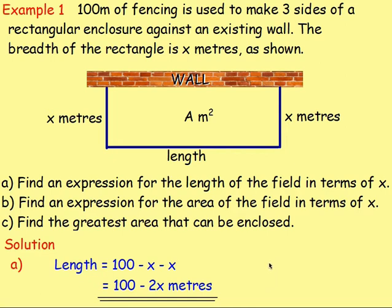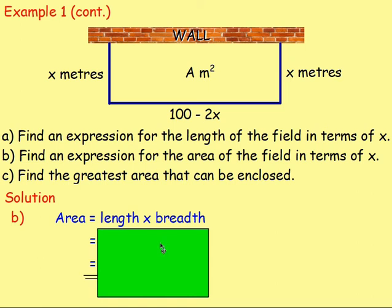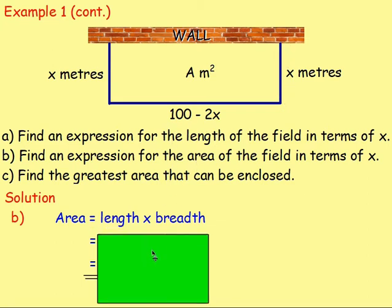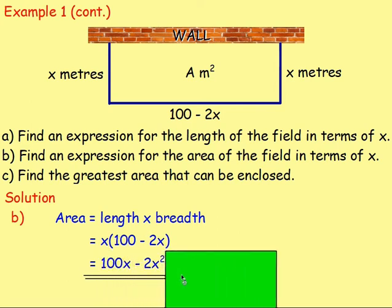For part b, find an expression for the area of the field. We now know the length is 100 minus 2x. The area of a rectangle is length times breadth, so multiply (100 minus 2x) by x. Multiplying out the brackets gives 100x minus 2x squared square metres.